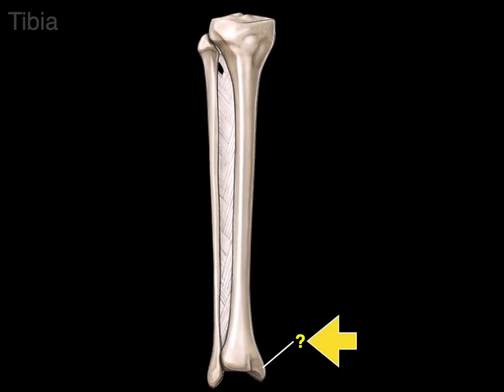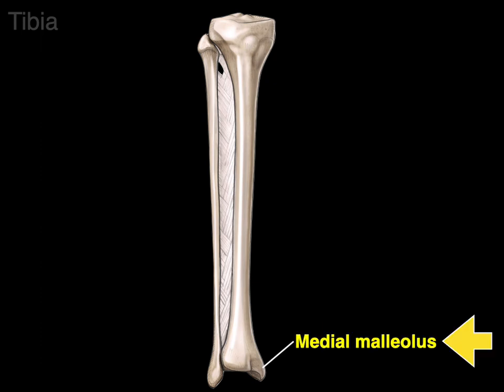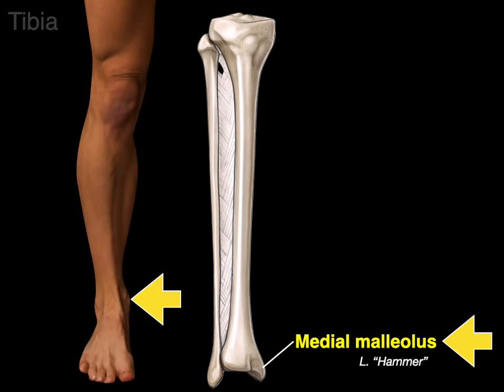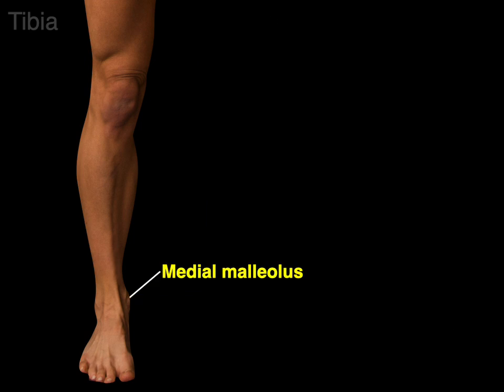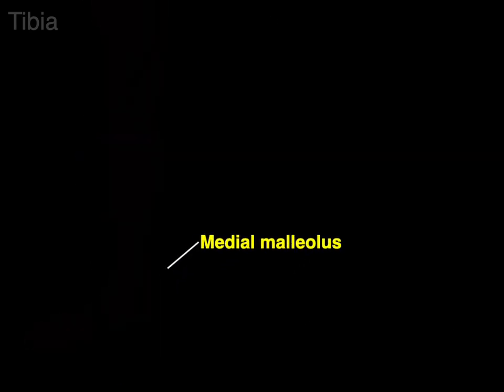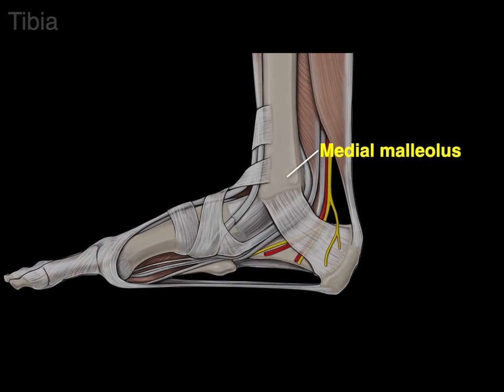On the medial side of the tibia distally, forming the medial surface of the ankle joint, is the medial malleolus. The word malleolus is Latin for hammer, because that's what it kind of looks like. In surface anatomy we can pivot to see a medial view, and there's the medial malleolus, which has a dense connective tissue called the flexor retinaculum that attaches to the calcaneus, forming a tunnel called the tarsal tunnel.